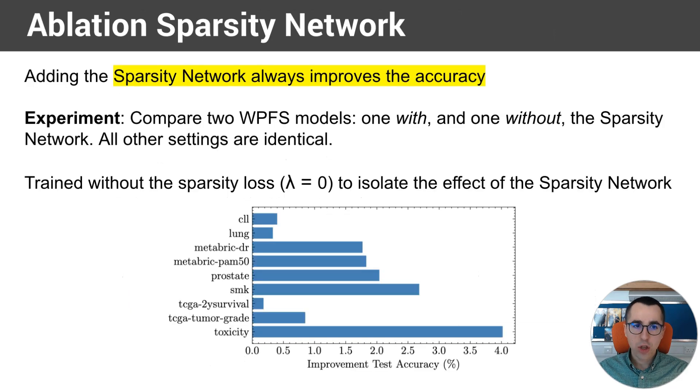We perform some ablations into the method, and firstly, we looked at the importance of the sparsity network. We found that it always, across datasets, improves the accuracy. And we compare two models. So we take the actual model with a sparsity network, and we take an identical model, but without the sparsity network. And we see that, across datasets, adding the sparsity network improves performance. We performed this experiment without the sparsity loss, so by further tuning the sparsity loss, the performance can only increase.